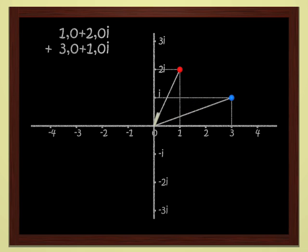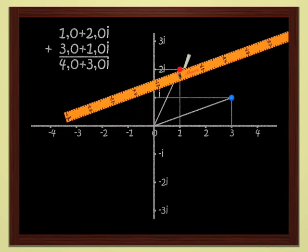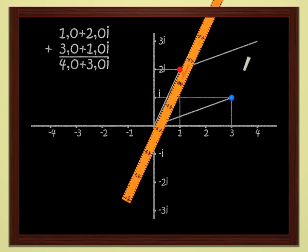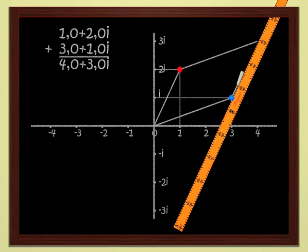Well, you add them just as school children do. That gives us 4 plus 3i. Geometrically, this is just addition of vectors. You see that it's no problem to add complex numbers.